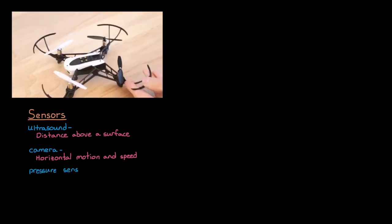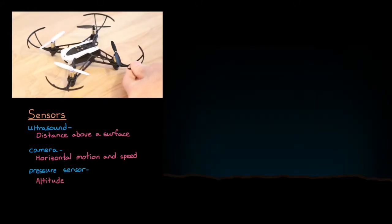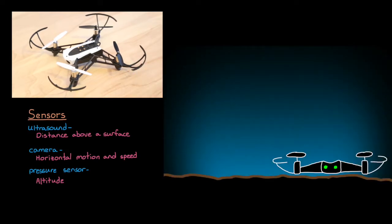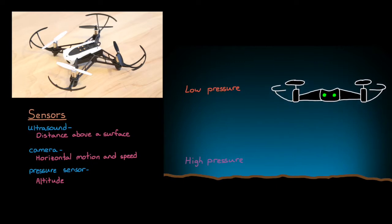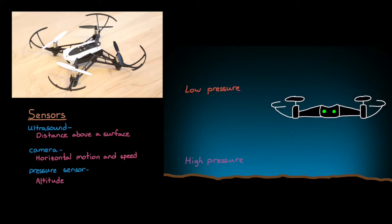Now inside the mini drone there is a pressure sensor, which is indirectly measuring altitude. As the drone climbs in altitude, the air pressure drops slightly, and we can use this slight change in pressure to estimate how the altitude of the mini drone is changing. Is it going up or down?